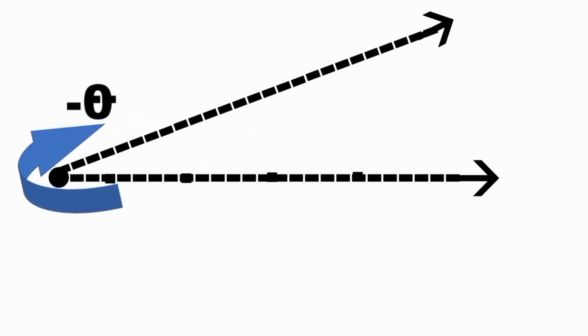Measuring the angle in clockwise direction, angle theta is negative. Angles are measured in degrees or radians.